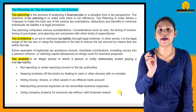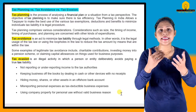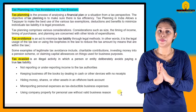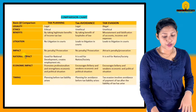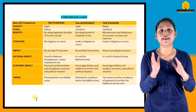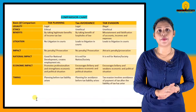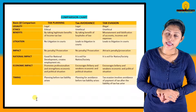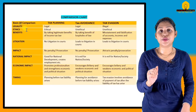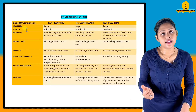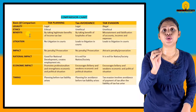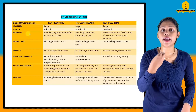Now I will give a comparison chart of the three measures so you can clearly understand. First issue is legality: tax planning and tax avoidance are both legal procedures. Second is ethics: even though tax avoidance is legal, it may be considered unethical. Third is benefits: tax planning offers exemptions and reductions as per government rules, and results in less income tax paid.